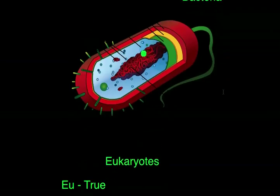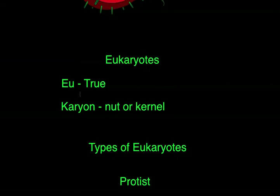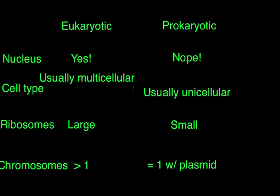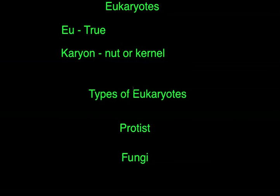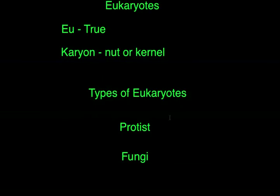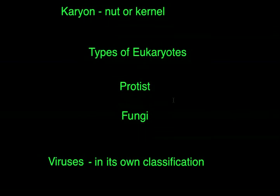The other type of prokaryote is bacteria, and we'll talk a lot more about that later. For eukaryotes, eu means true and karyon means nut or kernel — again referring to the nucleus — so eukaryote means true nucleus, which makes sense because it has one. There are two types of eukaryotes we're really going to focus on: protists and fungi. Protists are more commonly unicellular — an example being plasmodium falciparum, which causes malaria in humans. And fungi account for all your fungal infections. We'll talk more about both in depth later.